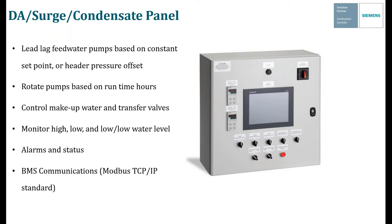Each panel can control a single tank, but these panels can also be set up to control two tanks at once. Sometimes they have what's called a split tank — a DA on one side and a surge tank on the other, with a separator in the middle. You can control both compartments with a single panel as long as you have six pumps total or fewer, in a configuration of up to four feed water pumps going into the boiler and up to two transfer pumps going from the surge into the DA. It doesn't have to be a split tank — it could be two separate tanks — as long as the pump numbers are the same.